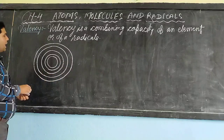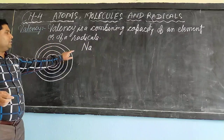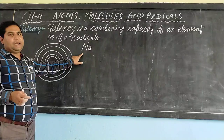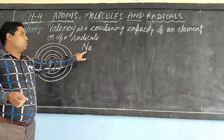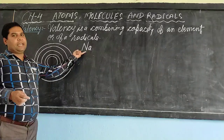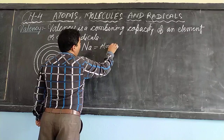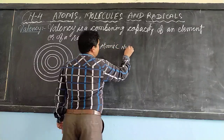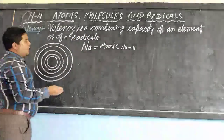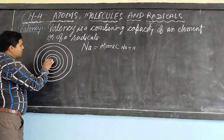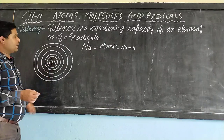This is the atomic structure of the element sodium, which is denoted by Na because the name comes from the Latin name Natrium. So the symbol used is Na. The atomic number of sodium is 11. In the nucleus, protons and neutrons are found.